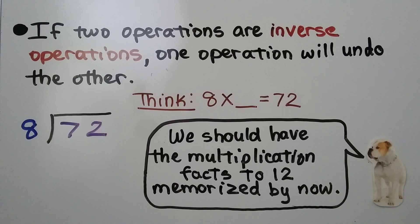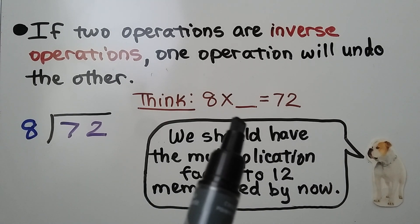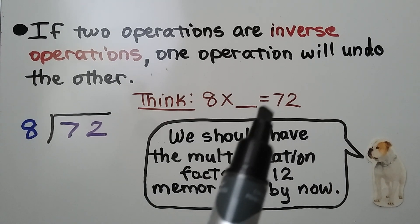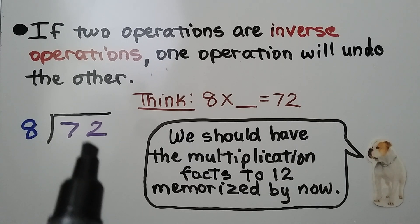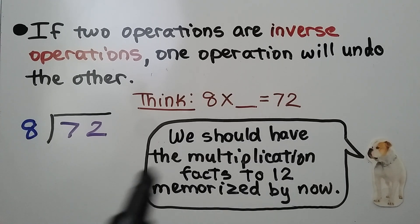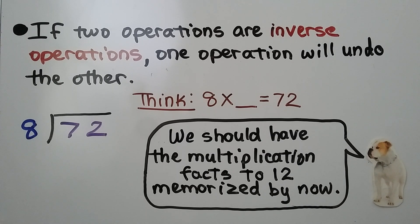If two operations are inverse operations, one operation will undo the other. Here we have 72 divided by 8. We can think: 8 times some number is equal to 72. We should have the multiplication facts to 12 memorized by now. You would know that that's 9. 8 times 9 is equal to 72, so 72 divided by 8 would be 9. We can use multiplication to solve for division.